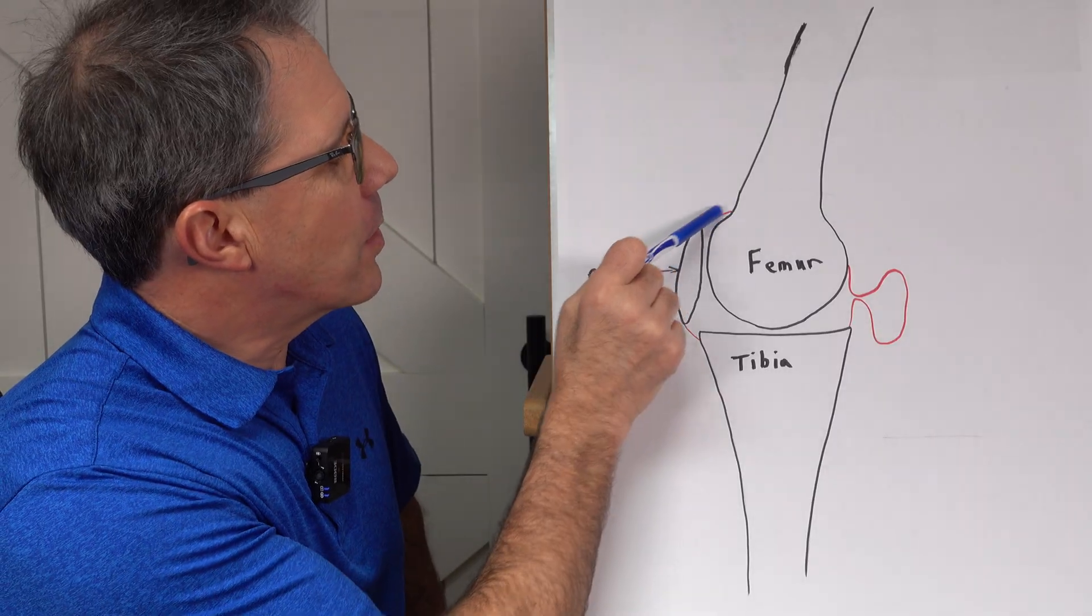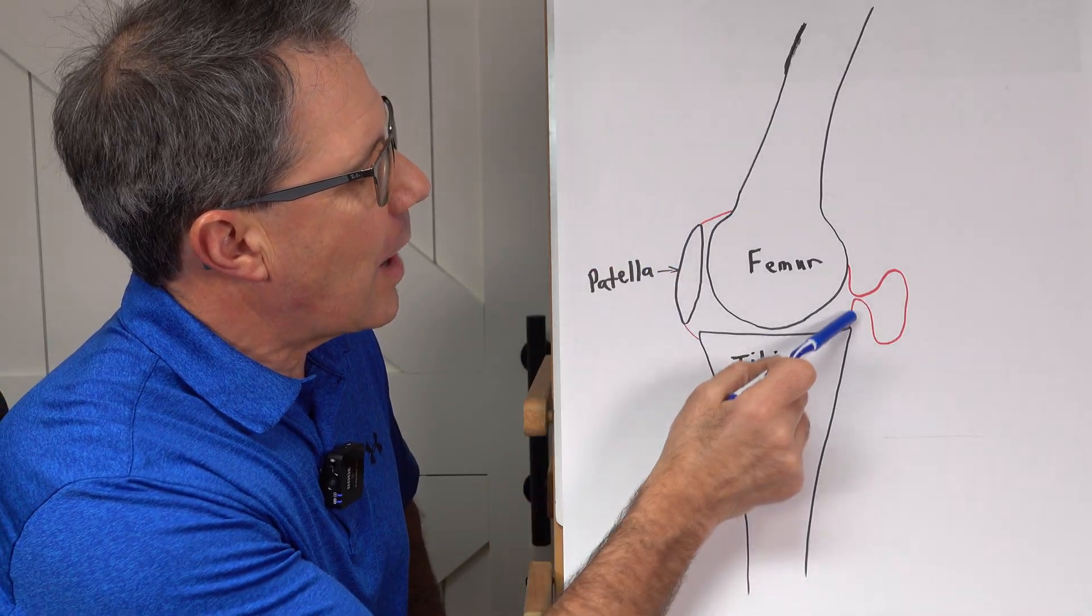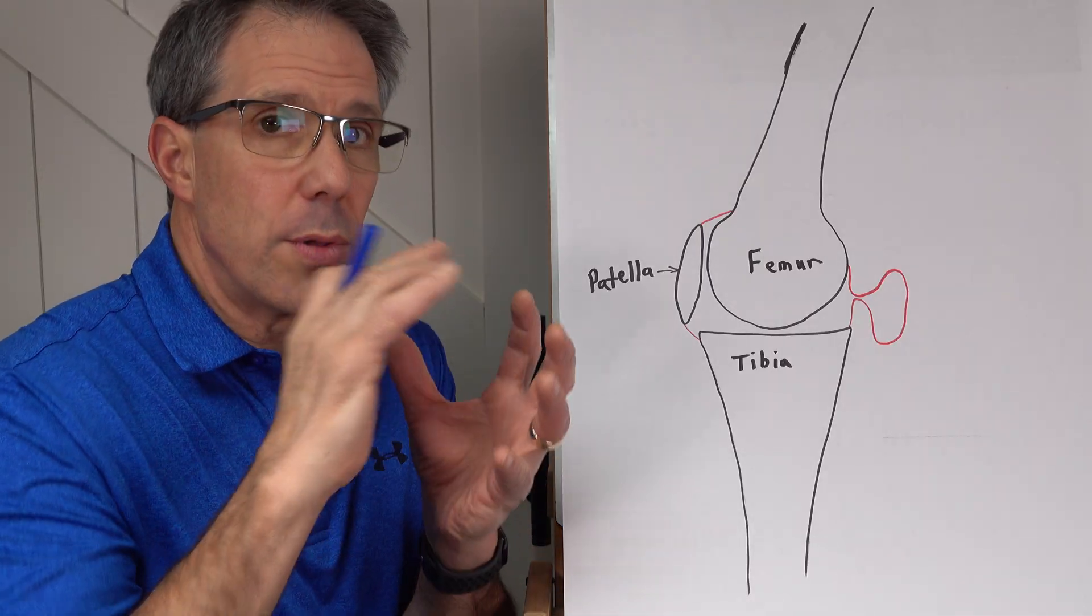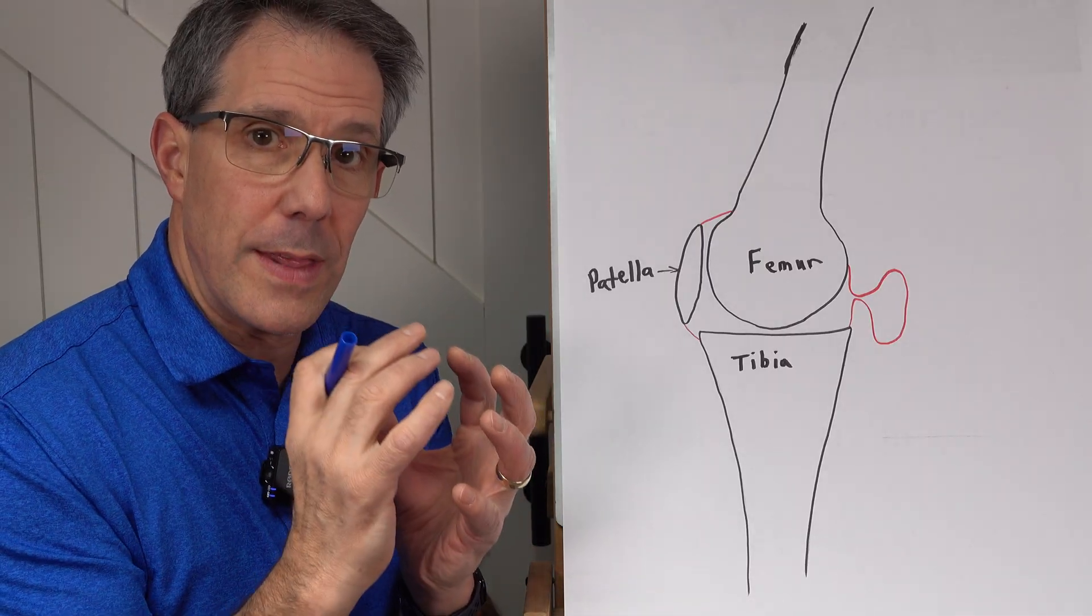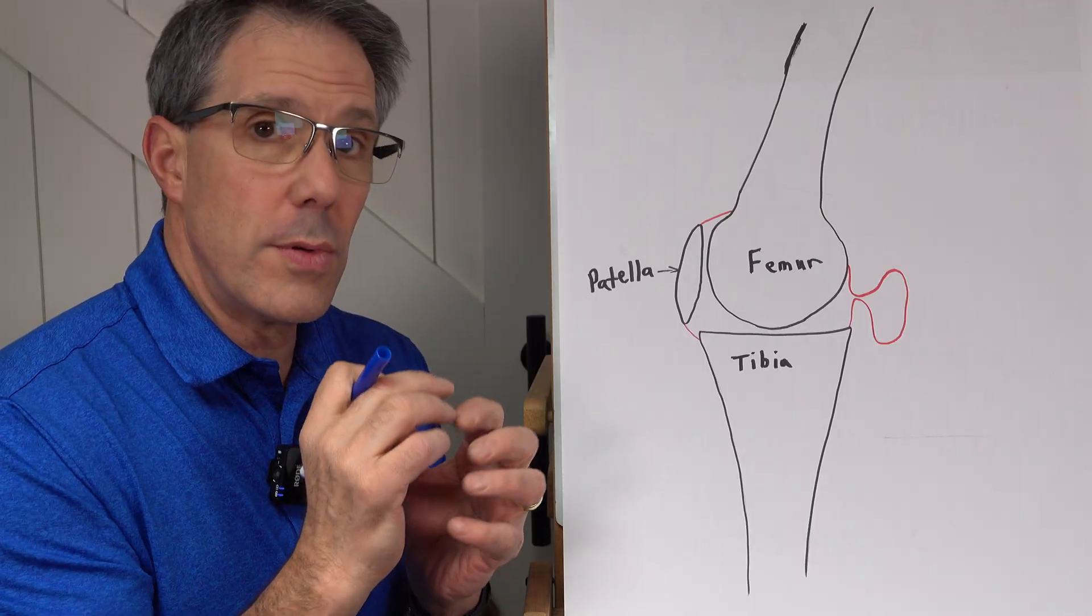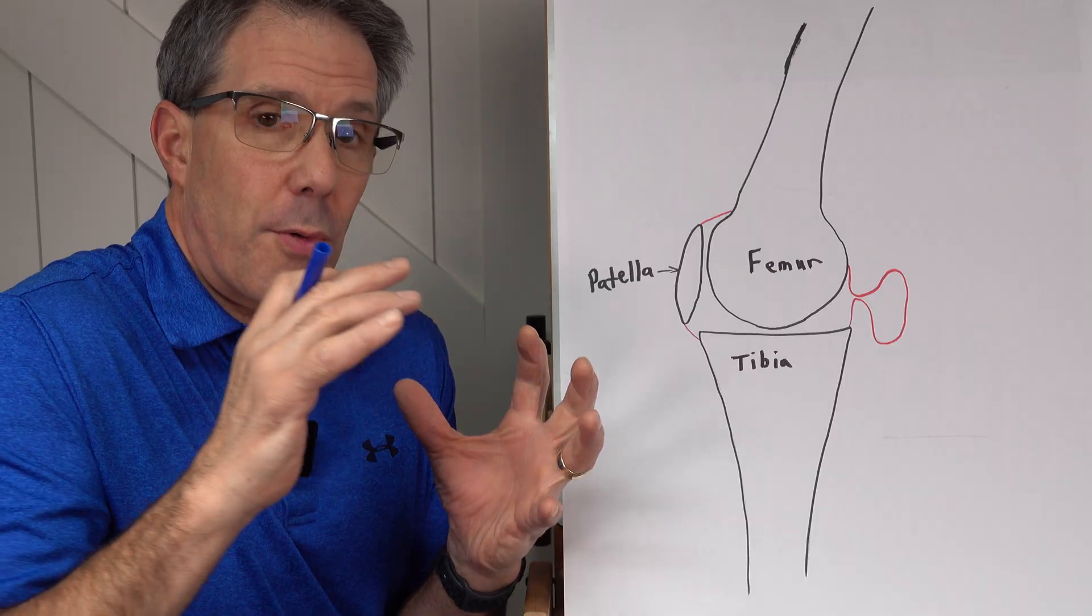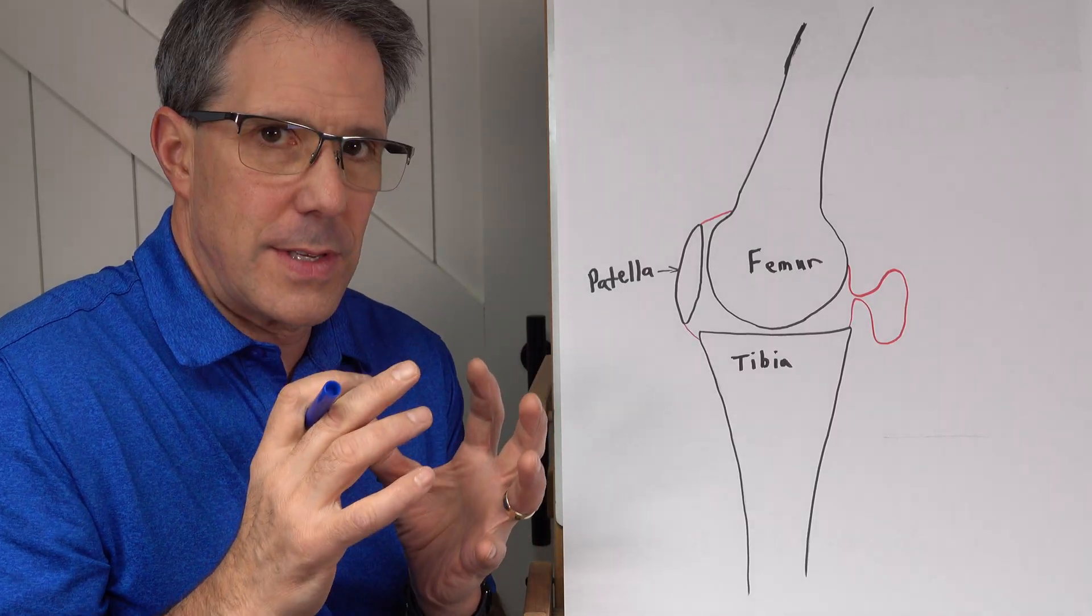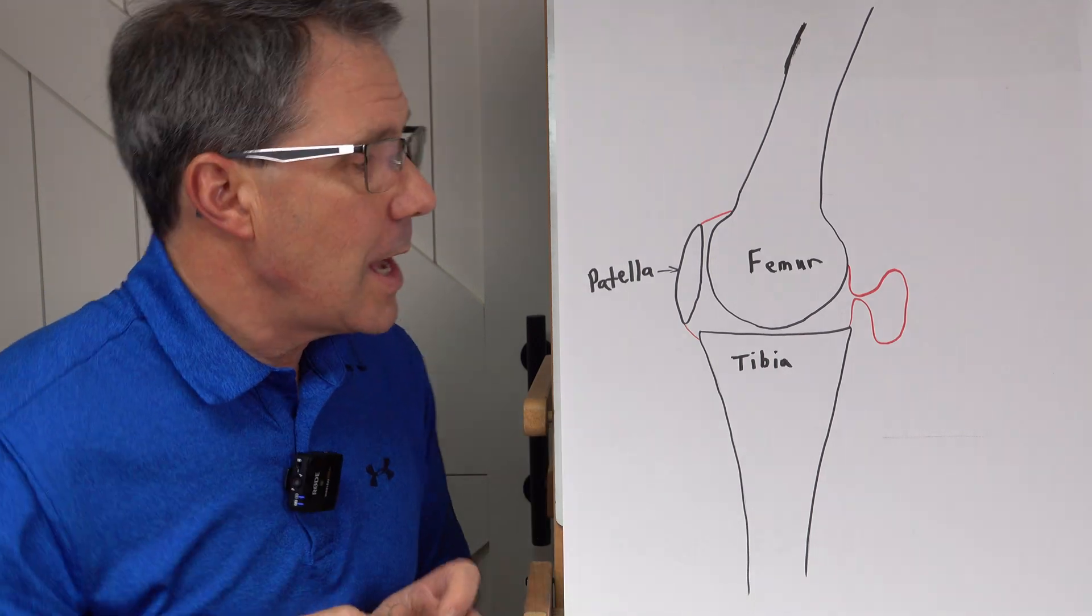Now, as you can see with this little red line, what I did is just kind of outlined this capsule tissue, which is basically like a water balloon around the knee that helps to hold fluid in there, also helps to hold that knee together. And just like a water balloon, the more water you put in it, the more pressure you have, that water is going to try to go to any area of least resistance or path of least resistance.